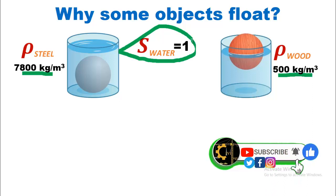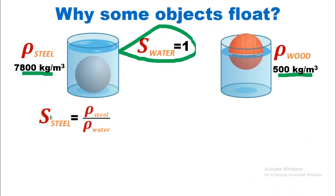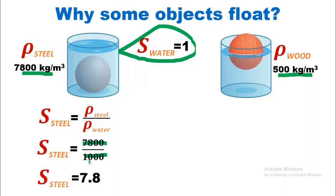Now, if we find the specific gravity of steel, the formula is density of steel divided by density of water. The density of steel is 7800 and the density of water is 1000 kg per cubic meter. Dividing, we get 7.8. It has no unit — simply the value is 7.8.